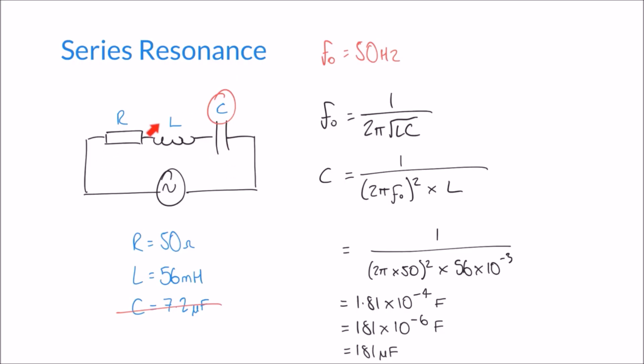That's an example of working backwards to find which component values give us a particular resonant frequency. I hope this video has been helpful on series resonance. If you haven't done so already, you can check back at our examples on calculating voltages and currents in series RLC circuits as well.